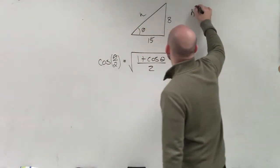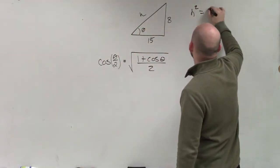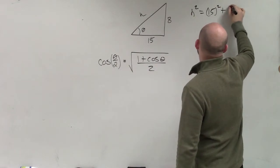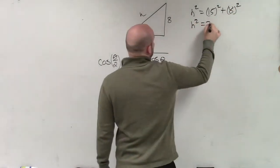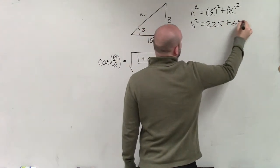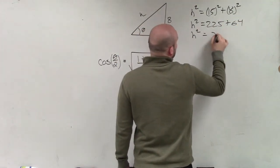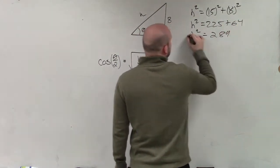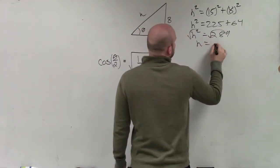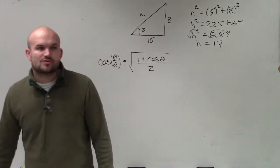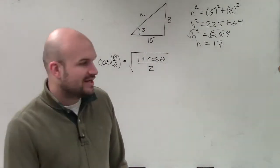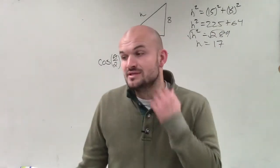But in case you're like, how did you know that? You can always set up the Pythagorean theorem. So therefore, you'd have h squared equals 225 plus 64. H squared equals 289. Square root, square root. H equals 17. But it's a Pythagorean triple, ladies and gentlemen. So get used to the common ones that we've used in this class.